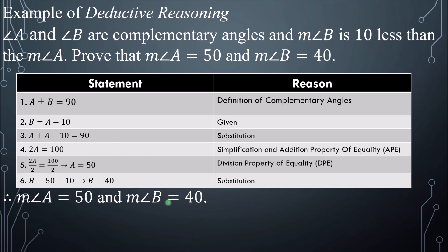Again, we used specific information coming from the general idea to prove the general idea itself. That is deductive reasoning, and this kind of proving uses a two-column proof, where the first column has the statement and the second column has the reason.